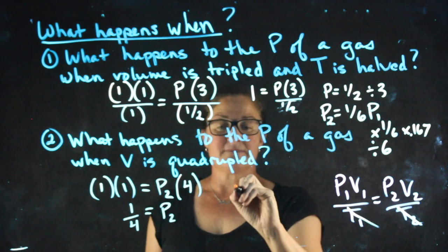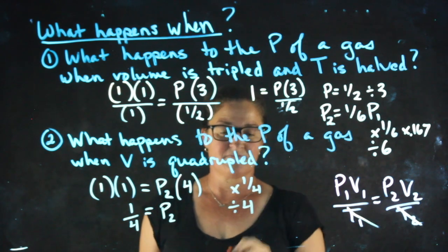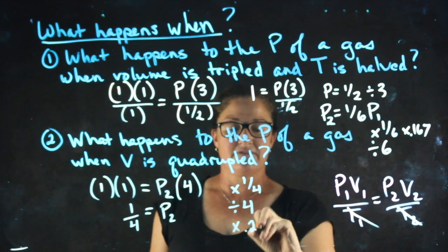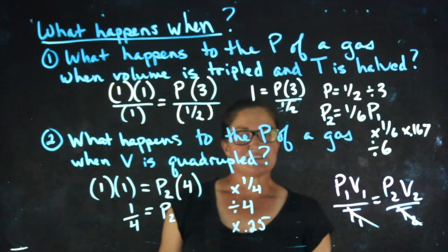So ways I can express my answer, I can say times a fourth, I can say divided by four, I could say times 0.25. Any one of those would be acceptable ways to express it.